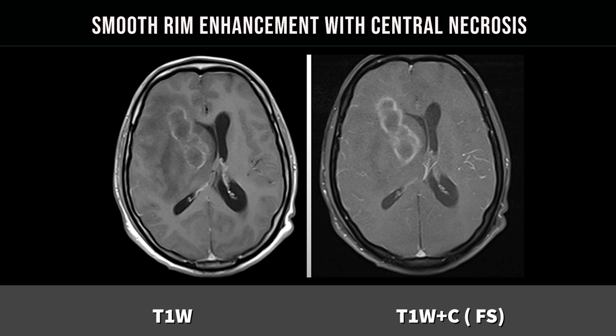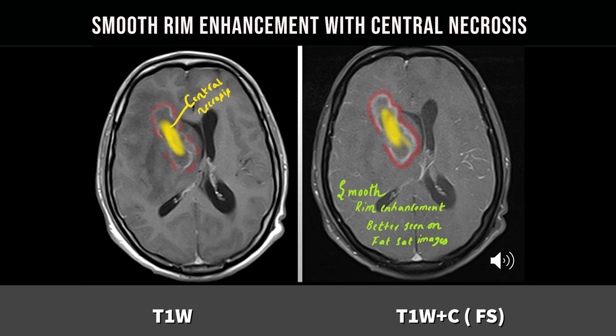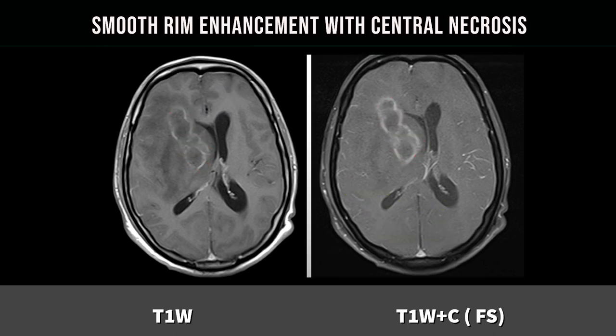On the post-contrast study, this is without fat saturation and this is with fat saturation with MPC. It is showing beautiful peripheral enhancement with a smooth wall. The smooth wall gives some clue to the nature of the space occupying lesion. The wall is much better appreciated with MPC and fat saturation. The central non-enhanced portion could be a necrotic portion.